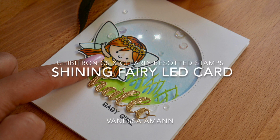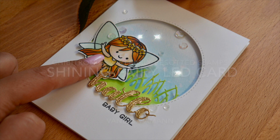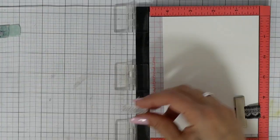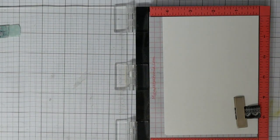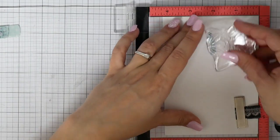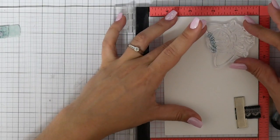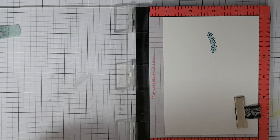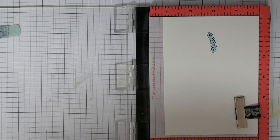Hello friends, today I'm back with another Chibitronics tutorial. This time I'm using this cute little fairy stamp set from Clearly Besotted to create a fairy tale scene. I'm doing a little bit of stamp masking because I wanted this flower headband to be together with the image.